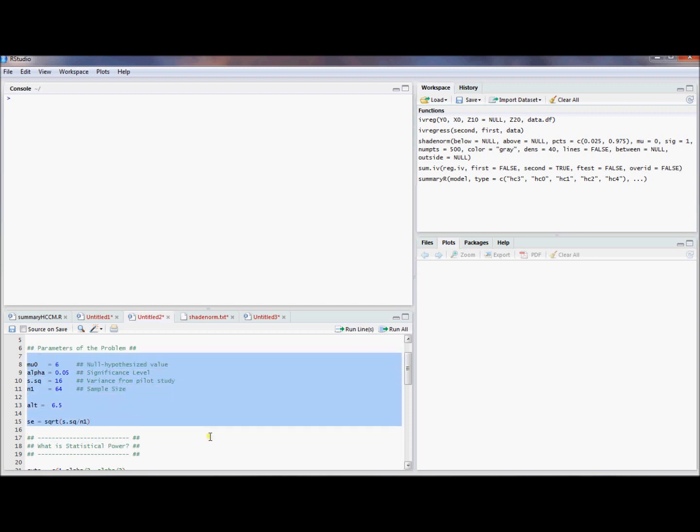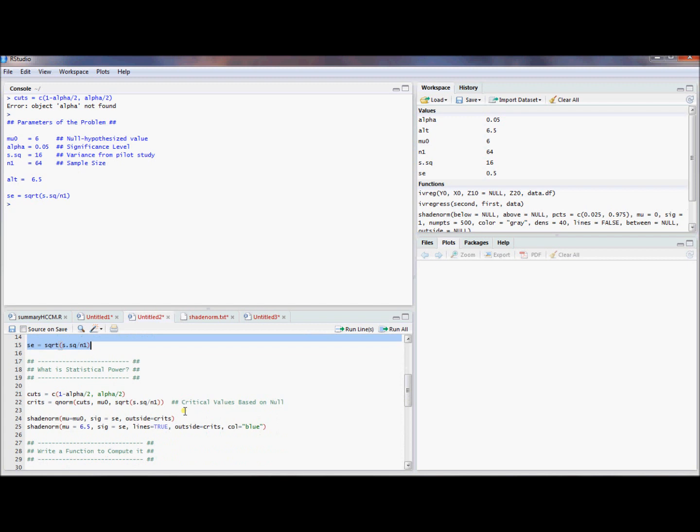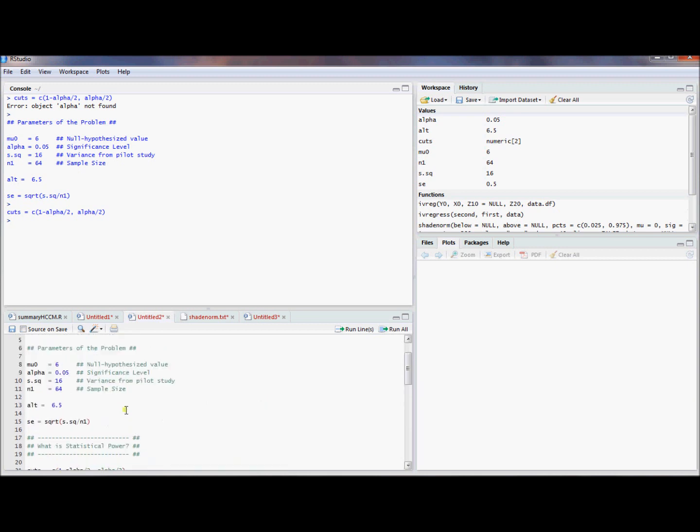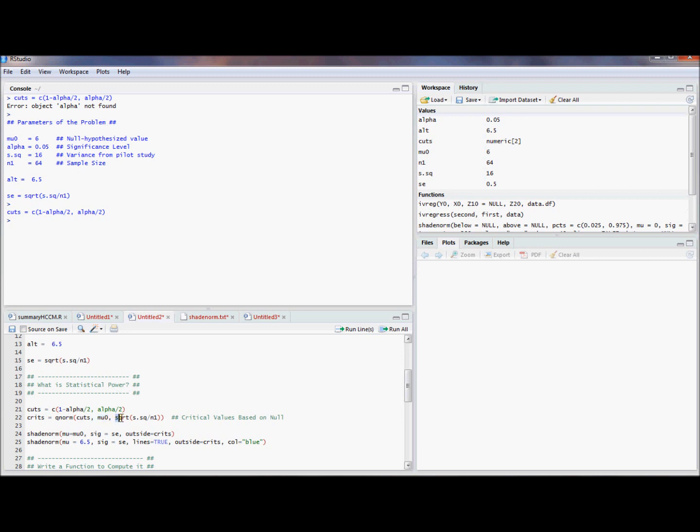And we're just doing a simple hypothesis test. We're going to go and talk about what is statistical power. So what I'm doing here is I'm putting the upper and lower percentiles into a vector called cuts. Next I'm going to put this to work by basically asking R to give me critical values on the scale of X bar. So we're going to go look at a normal with a mean of the null hypothesized mean and a standard deviation of the standard error.